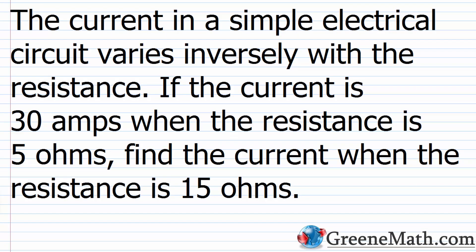Let's look at a word problem that deals with Ohm's law. As an Algebra 1 student, you might have come across this in science class. The current in a simple electrical circuit varies inversely with the resistance. If the current is 30 amps when the resistance is 5 ohms, find the current when the resistance is 15 ohms.